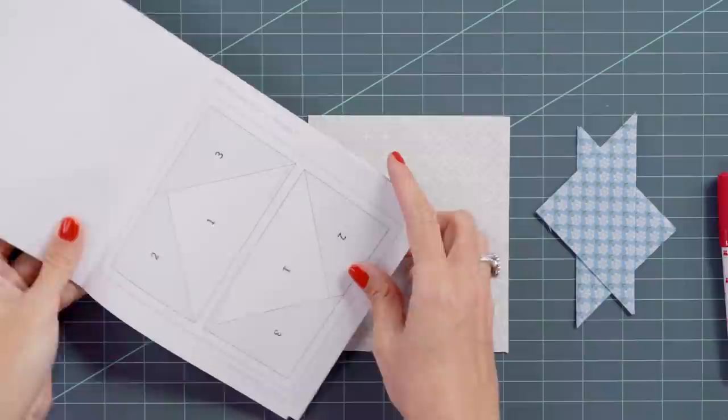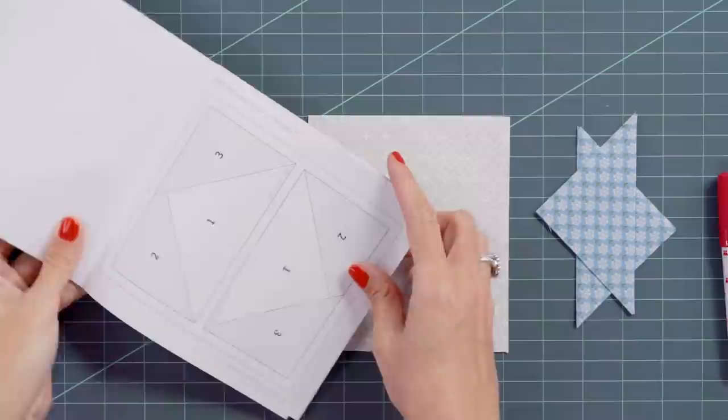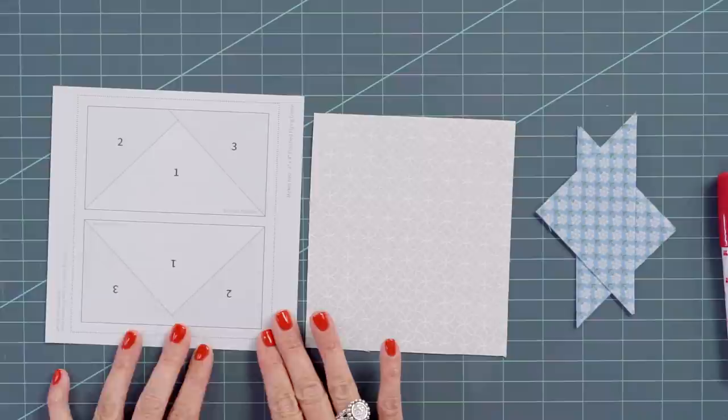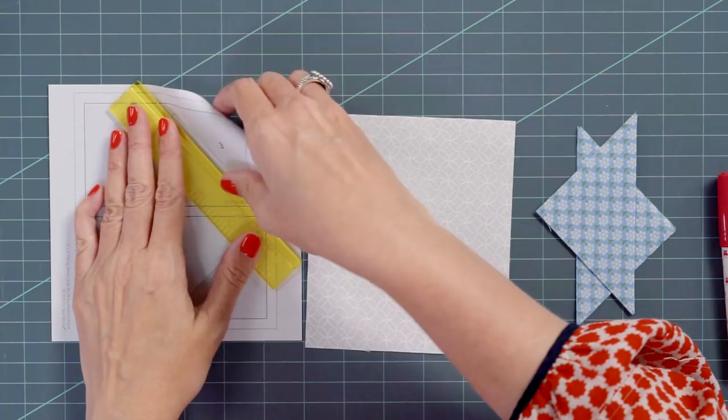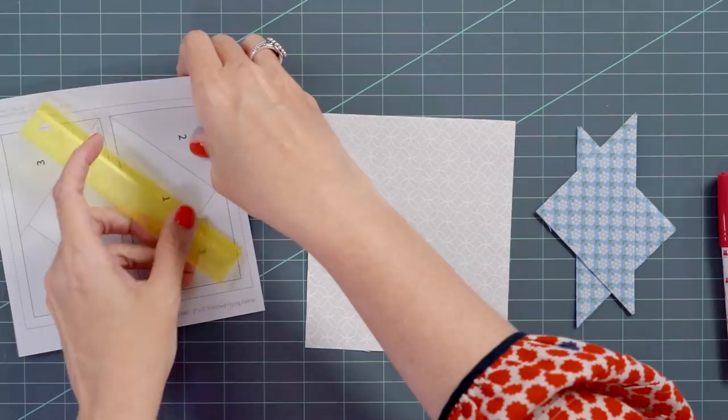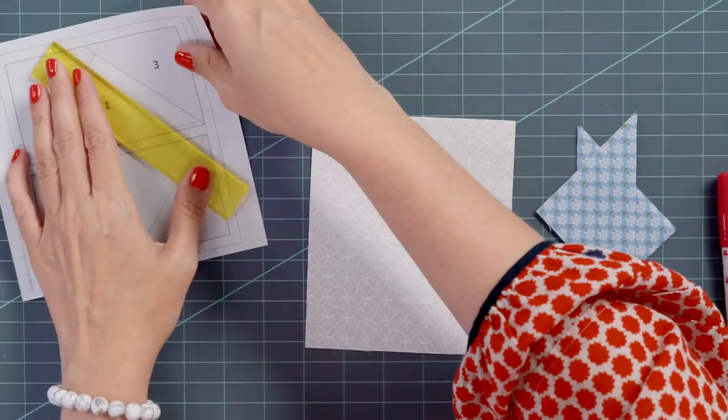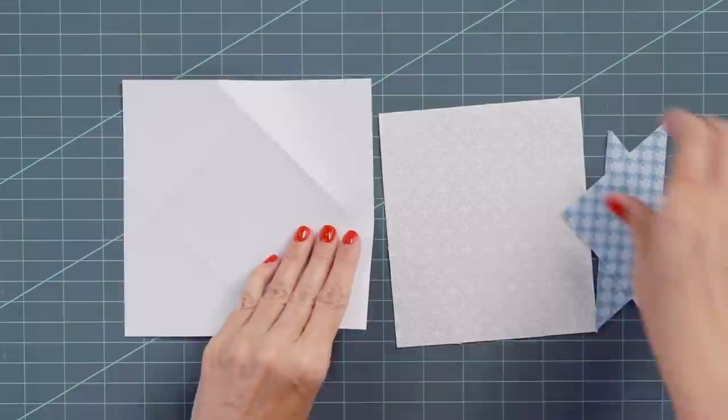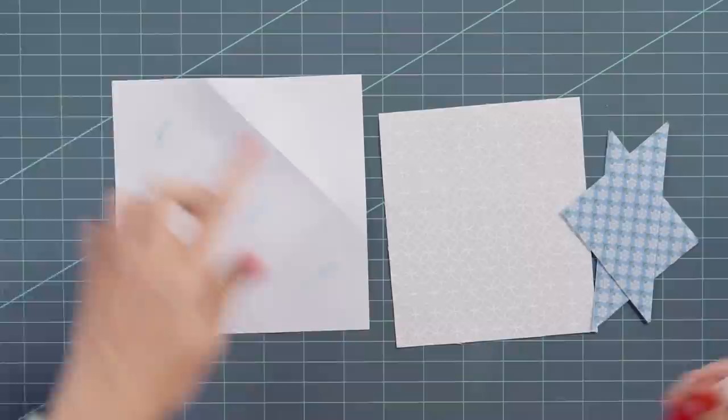So to make your flying geese, you're just going to take one paper out. We have specially designed this paper to be nice and thin so that you can pull the paper off. What I like to do before I start is crease the triangles on the outside. Just go ahead and crease these. It will make it easier as you go to have these four creased. The fun thing is you are making two flying geese at once.